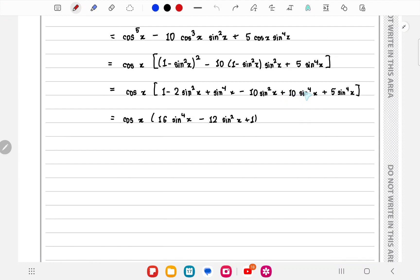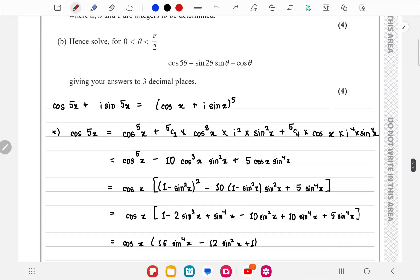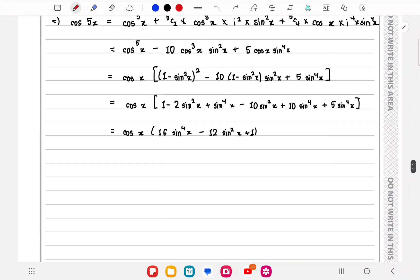So you have 10 sin to the power 4x plus 5 sin to the power 4x plus sin to the power 4x, so 16. Then you have minus 10 sin² x minus 2 sin² x, minus 12 sin² x and 1. So you have the values of a, b, and c to be 16, minus 12, and 1.